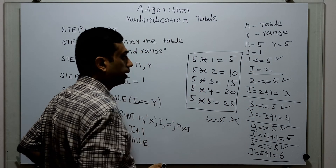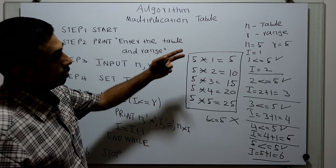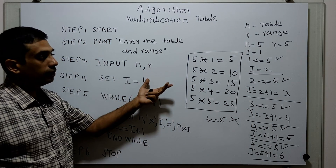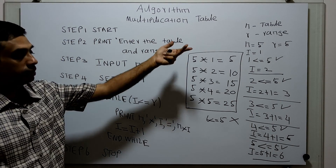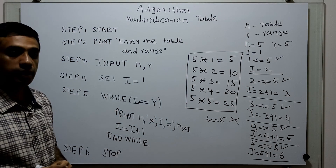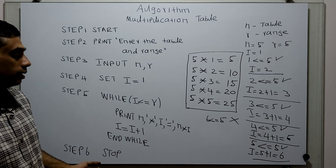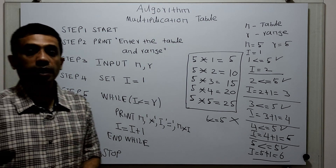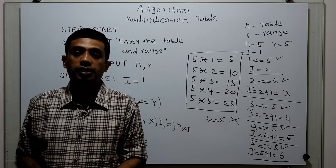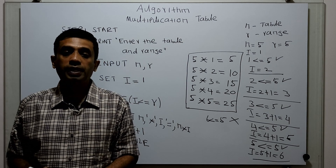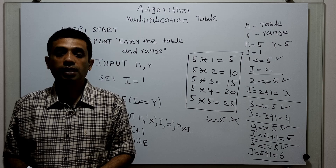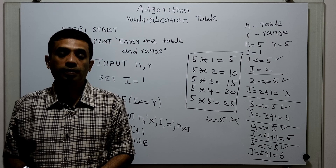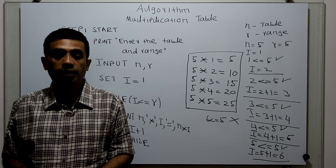So with input n equals 5 and range equals 5, I am getting this multiplication table perfectly. This algorithm will work for any table with any range. That's it — thanks for watching this video. Please subscribe to my channel, share, comment, and press the bell button. Thank you.